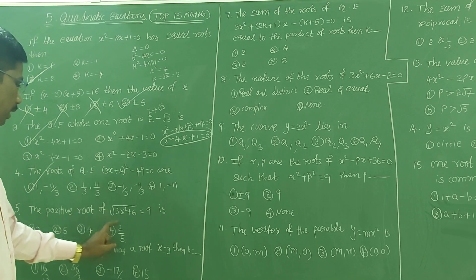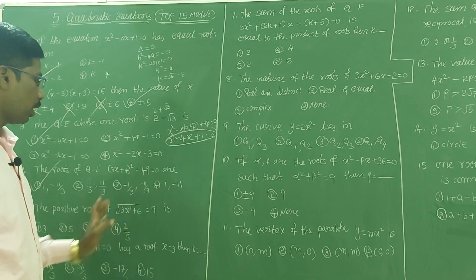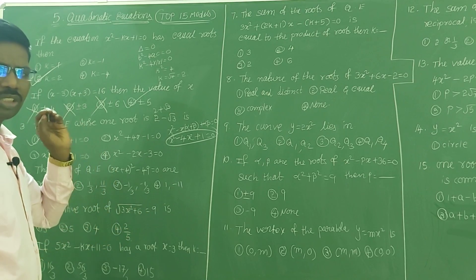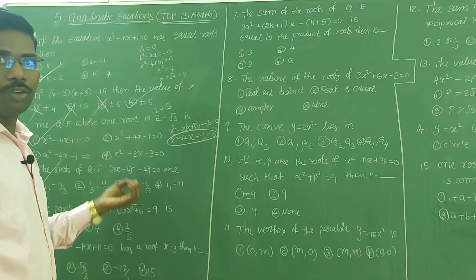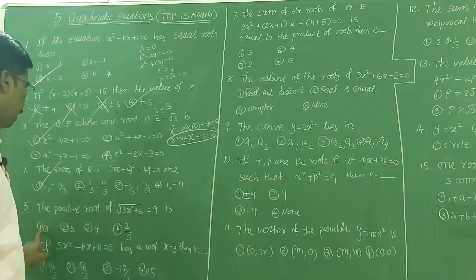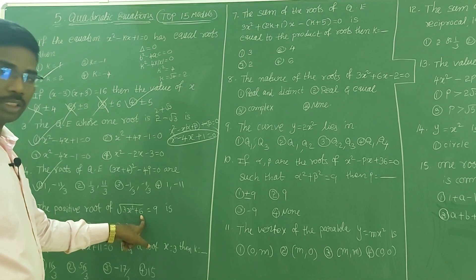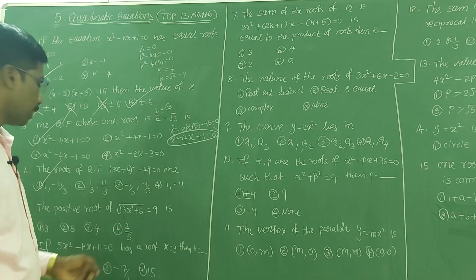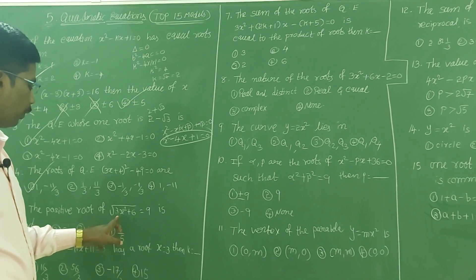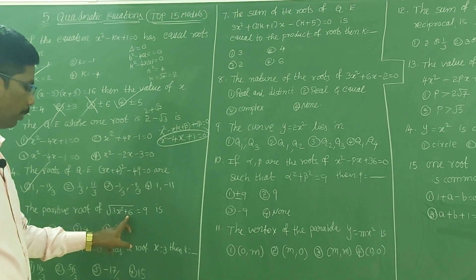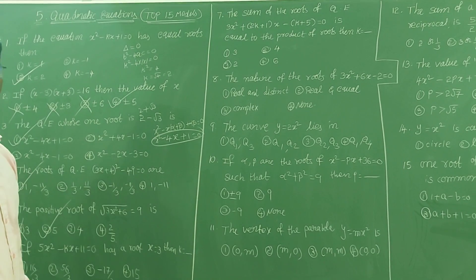Find the positive root of the quadratic equation. Do not square both sides — directly use the options method. Substituting 3: 3²×3 = 27, 27+6 = 33, √33 ≠ 9, first option wrong. Substituting 5: 5² = 25, 25×3 = 75, 75+6 = 81, √81 = 9. So the answer is the second option, which is 5.